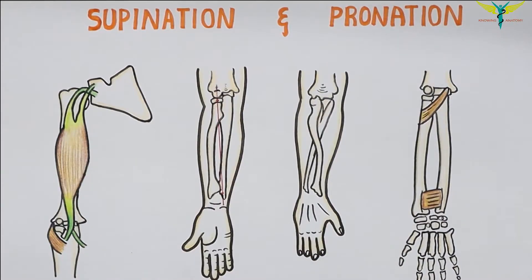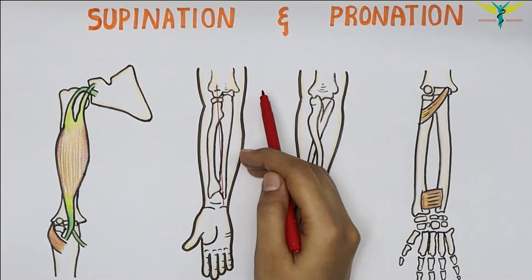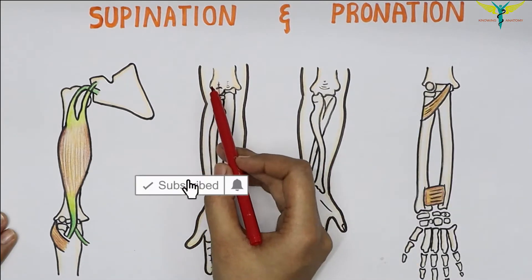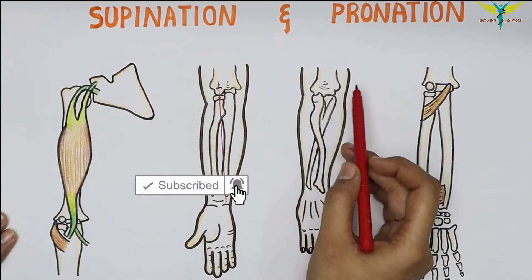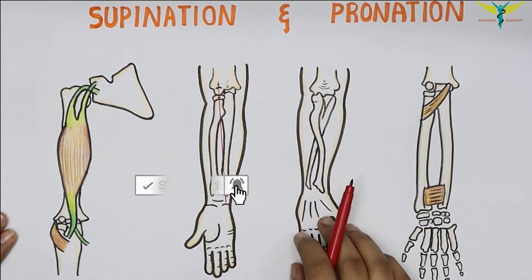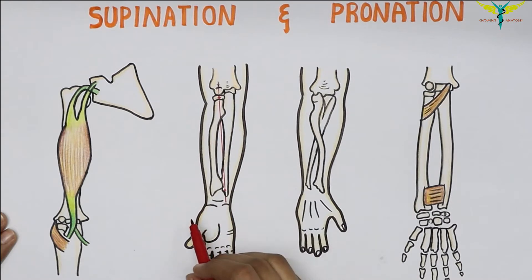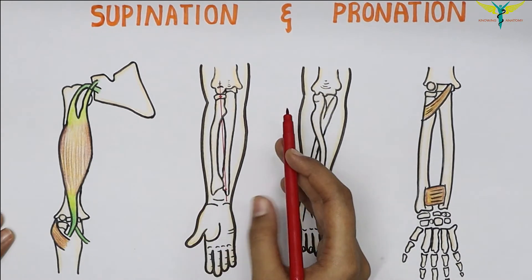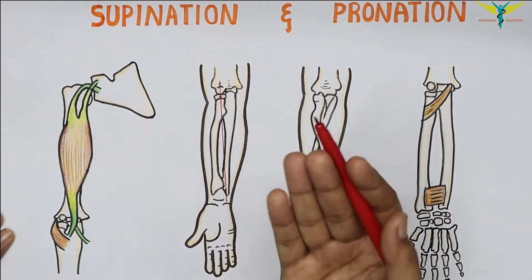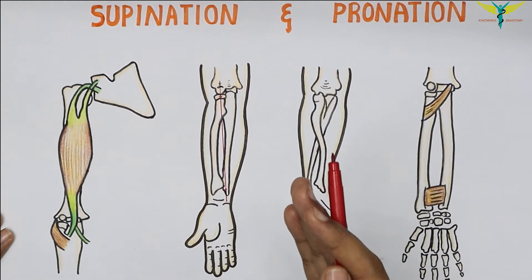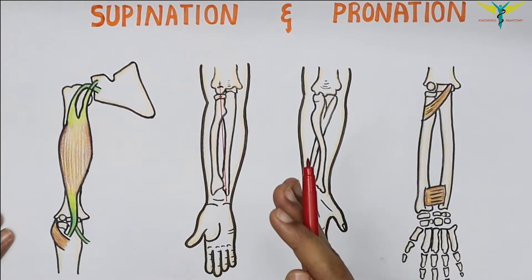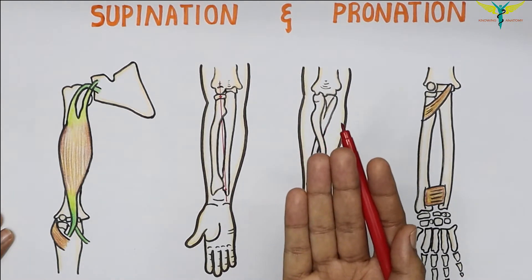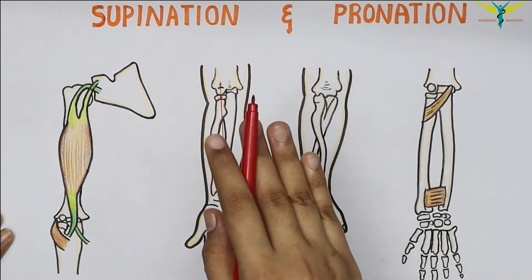In this video let's learn about supination and pronation. These movements play an important role in performing the skilled movements of the hand. When the elbow is semi-flexed, that is in mid-prone position, the palm is turned upwards in supination and downwards in pronation.